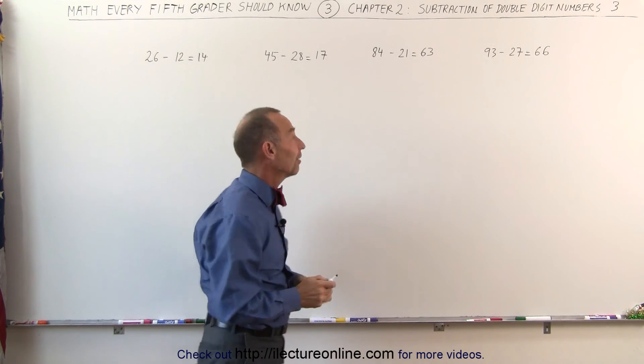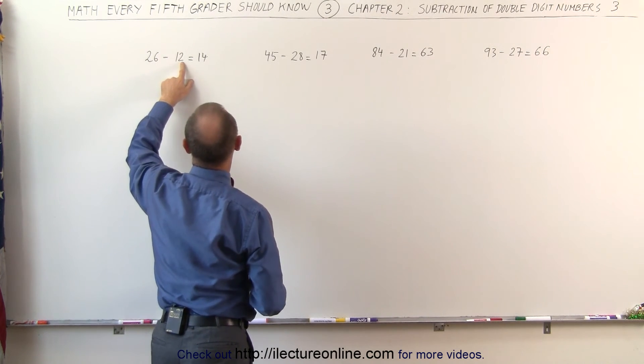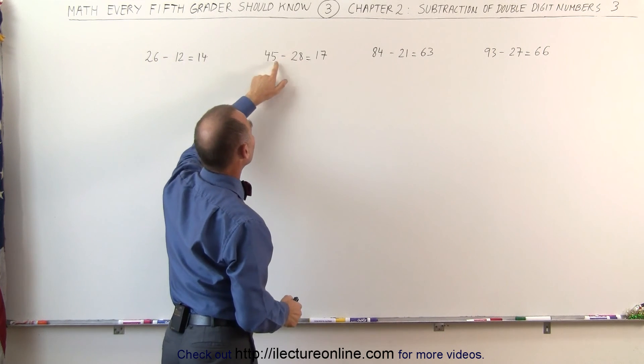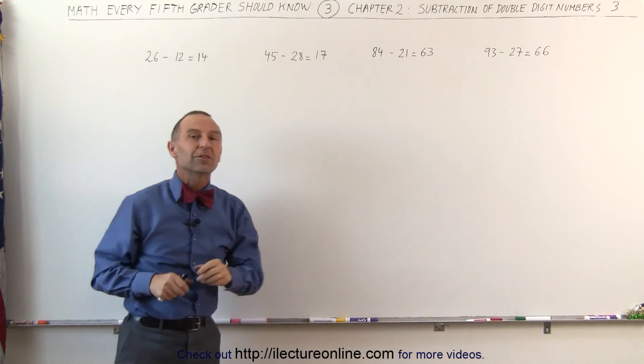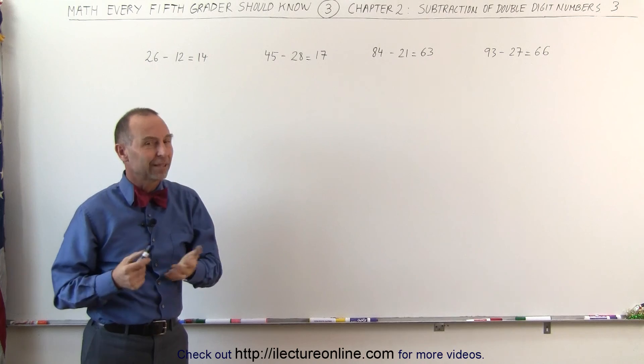And that's how we find the difference between two double-digit numbers. In one case where the second number is smaller than the one over here, and the other case where this number is bigger than that over there. And those are the two different techniques we use to subtract double-digit numbers from one another. And that's how it's done.